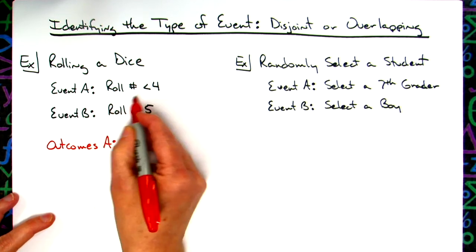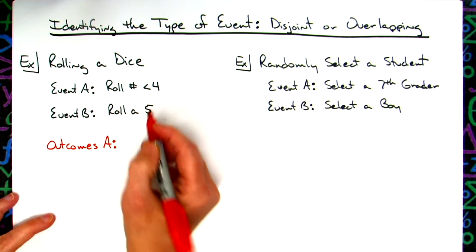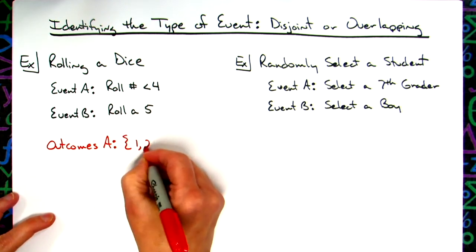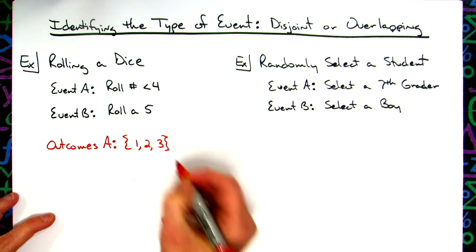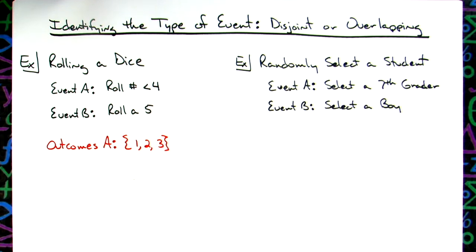Rolling a dice and getting a number less than four, I would have outcomes of one, two, and three. Four would not be less than four, and five and six would not work.